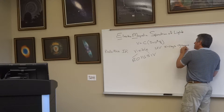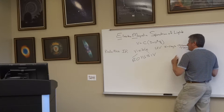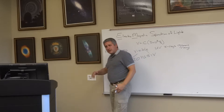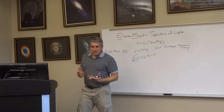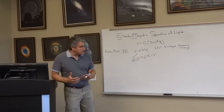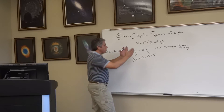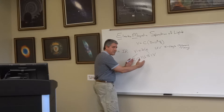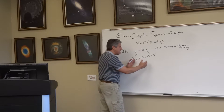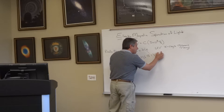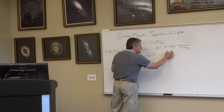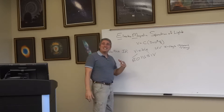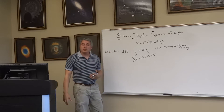This is a continuous spectrum of light. Why did we break it up the way we did? Because of the instruments present at the time and our ability to detect — our eyes detect visible light, biology gives us that. Instruments were then developed to detect different parts of the spectrum. It is a continuous spectrum.